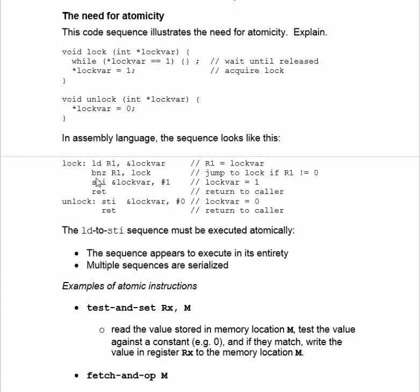If we want to express that in assembly language, it would look something like this. We load from the location of lock variable into register one, then we branch if register one — the value of lock variable — is not zero, and branch back to the lock in that case. If we don't branch back, we fall through and set lock variable to one, and now we've acquired the lock. When it comes time to unlock, we set the lock variable to zero and return. For this to work, you'd need this entire sequence — from the load to the store immediate — to be executed atomically, meaning nobody else can get in while all three of these instructions are executing. That's not the case with these ordinary instructions.